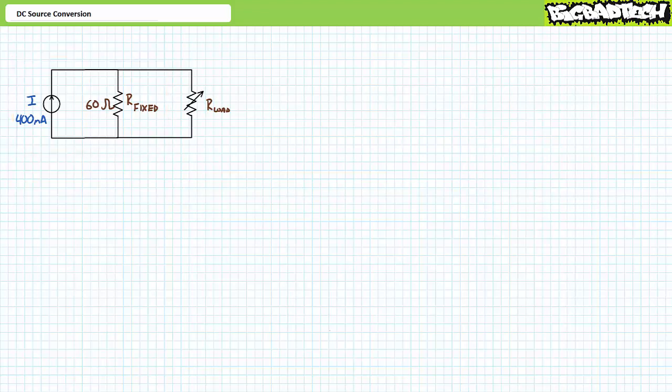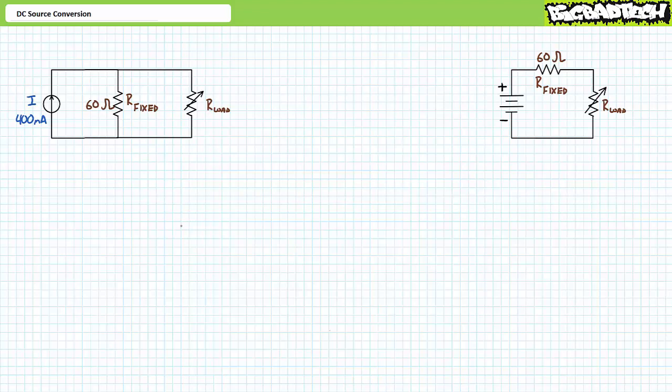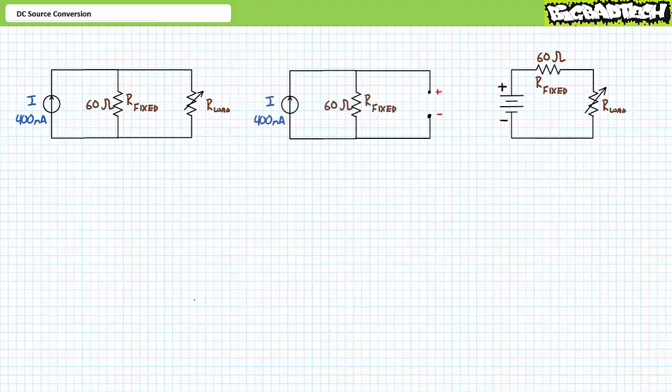We need to solve for two properties: one, the voltage magnitude, and two, the resistance value for the alternate source configuration. The value of the equivalent fixed series resistance is the exact same value as the fixed parallel resistance — only the position changes. Now we need to remove the variable load resistor and isolate the DC current source and fixed parallel resistance. To determine the value of the equivalent voltage source, one must solve for the open circuit voltage. With the load resistance removed, the open circuit voltage will be the voltage across the parallel resistance with all current traveling through it. An application of Ohm's law demonstrates that this is a value of 24 volts.